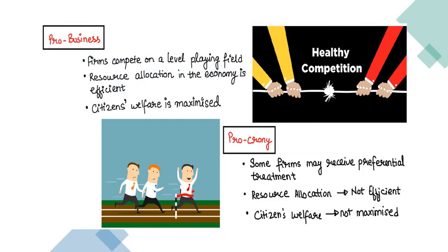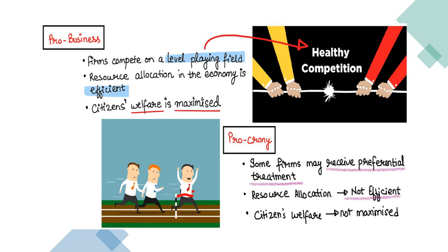Pro-business means business-friendly — firms compete on a level playing field with healthy competition, efficient resource allocation, and maximized citizens' welfare. Pro-crony is the complete opposite: some firms receive preferential treatment, resource allocation is not efficient, and there is no focus on citizens' welfare.